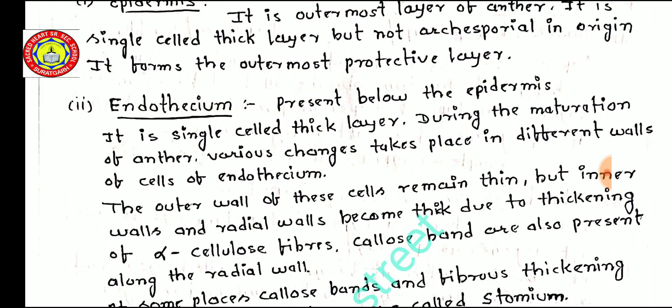The next layer is known as the endothesium, present below the epidermis. It is a single cell thick layer. During the maturation of the anther, various changes take place in the cell walls of the endothesium. The outermost wall of these cells remains thin, but the inner walls and radial walls become thick due to thickening of alpha-cellulose fibers.